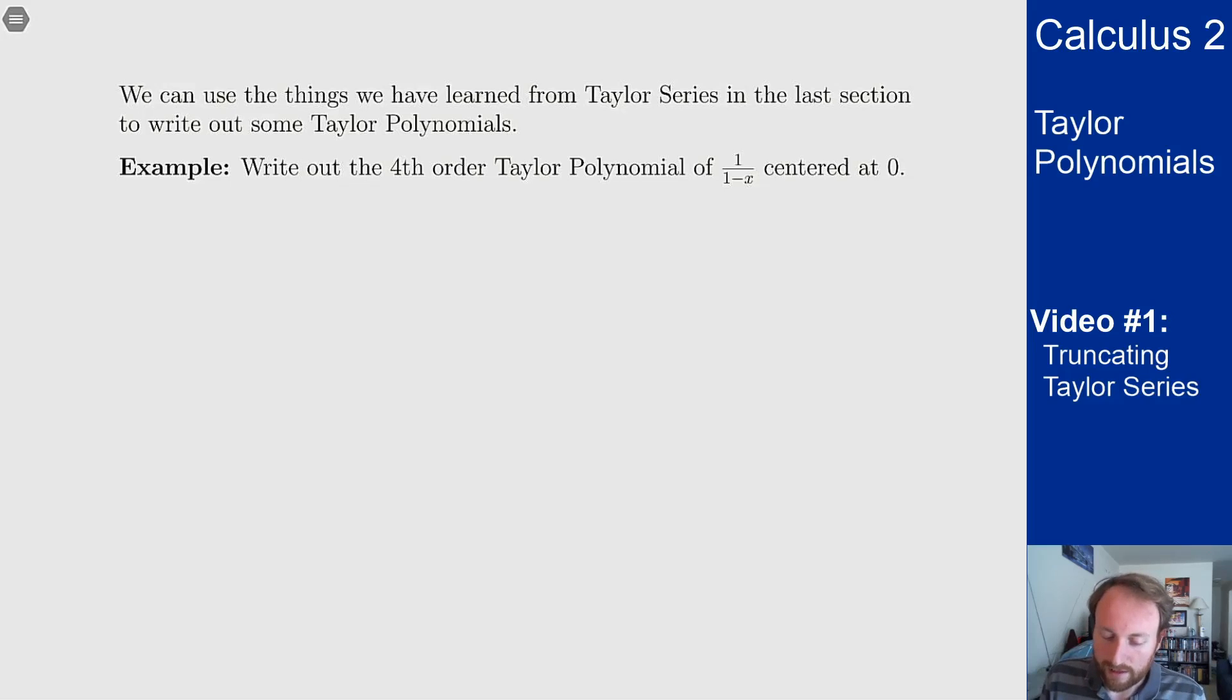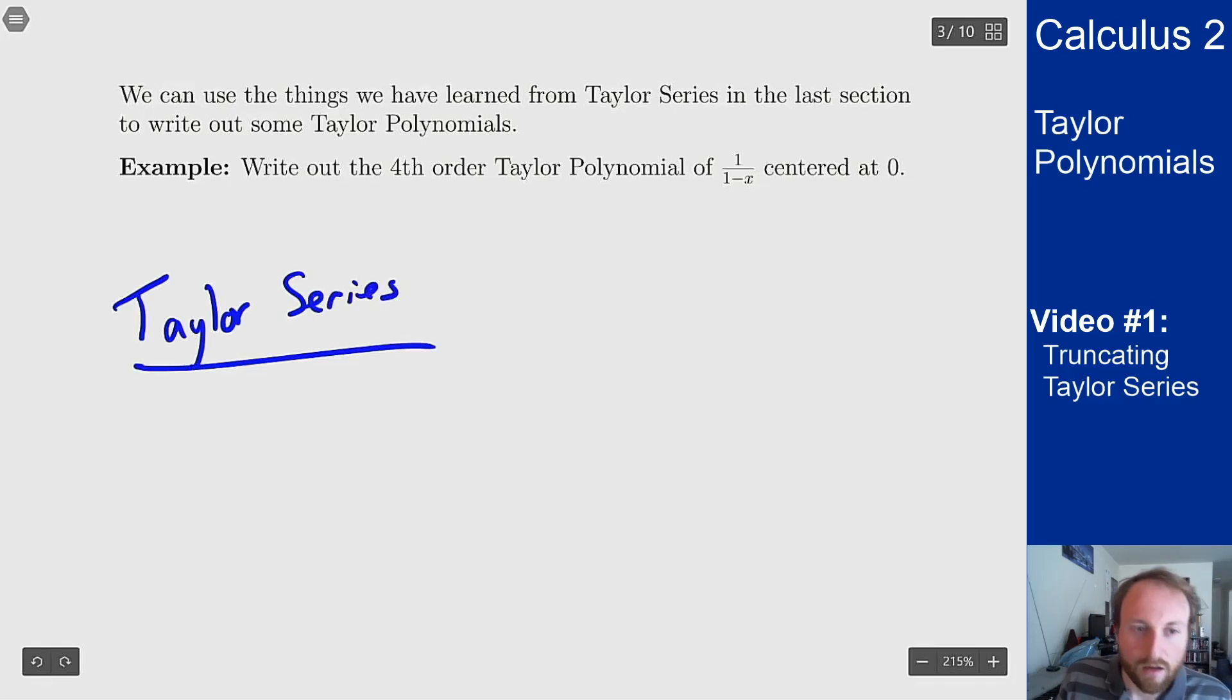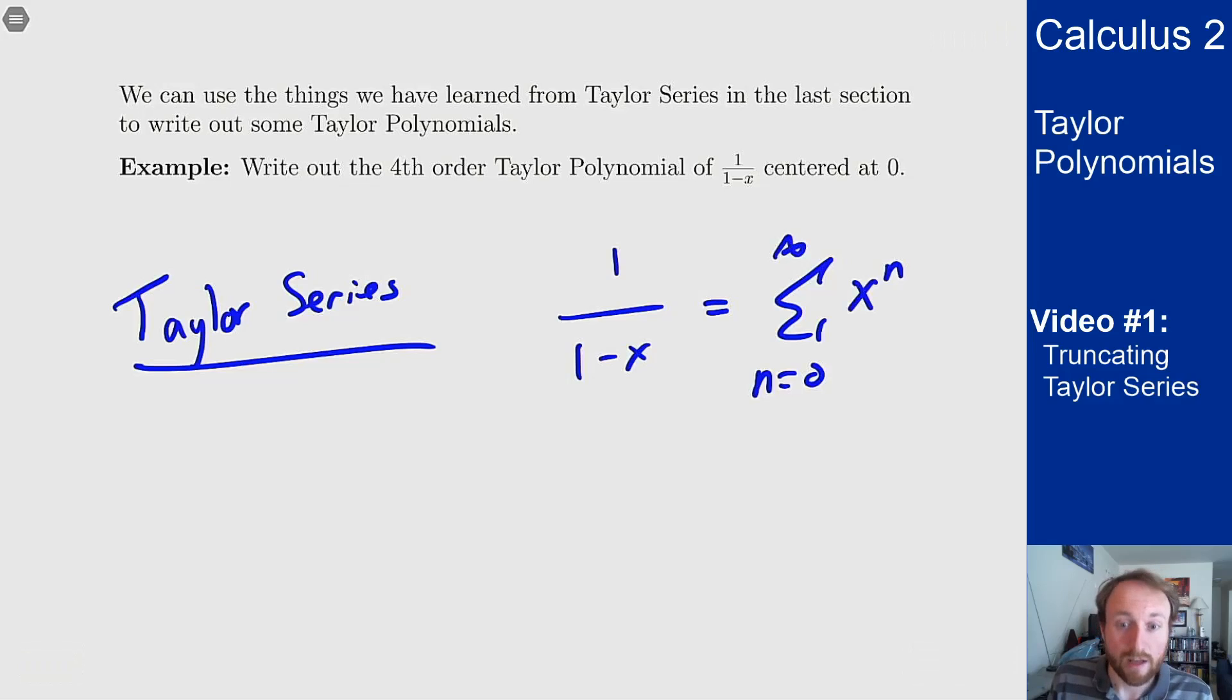If I want the fourth-order Taylor polynomial of 1/(1-x) centered at zero, we know what this Taylor series is. The Taylor series for 1/(1-x) is the sum from n=0 to infinity of xⁿ, because that's the power series for this function. If we have a power series that converges, we have a Taylor series and they're the same thing.